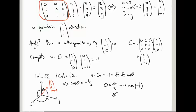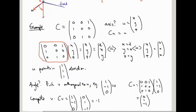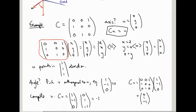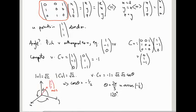In summary: if somebody hands you a matrix and tells you it's a 3D rotation matrix, you can always find the axis of rotation by solving the equation Au = u, and you can always find the angle of rotation by picking a vector orthogonal to the axis, rotating it using the matrix, and using dot products to compute the angle. In the next video we'll be talking about simultaneous equations.